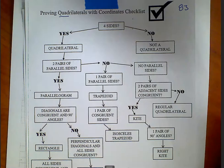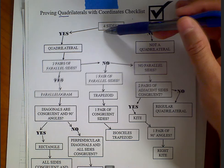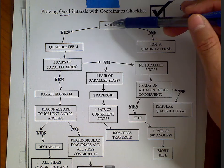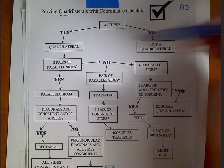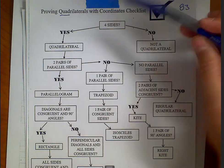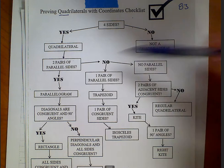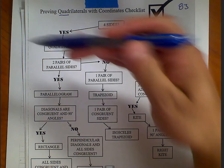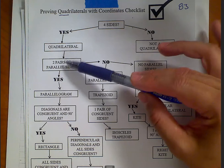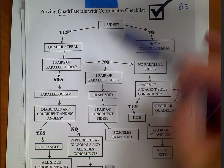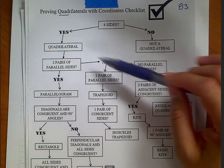Starting at the very beginning: does it have four sides? If no, it's not a quadrilateral — you're done. If yes, it is a quadrilateral. This is like that chart from a previous page that went down and talked about each shape. Next question: does it have two pairs of parallel sides?